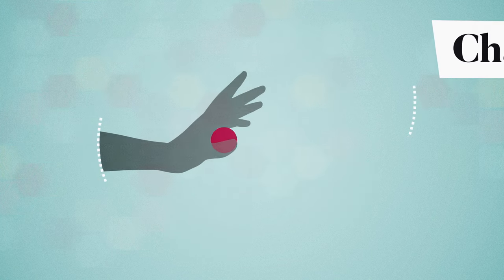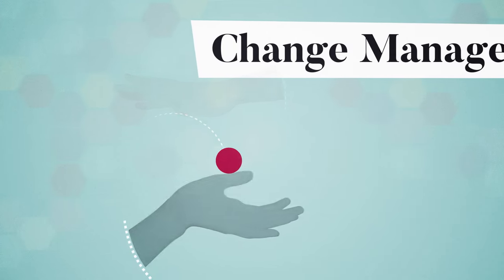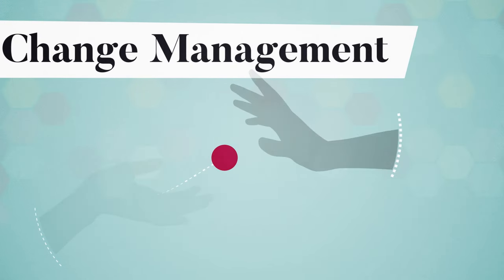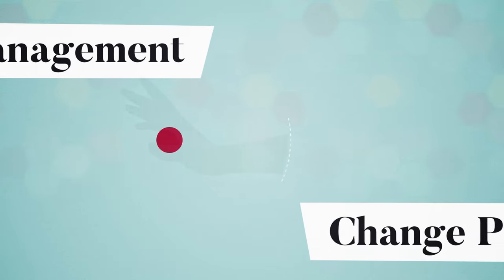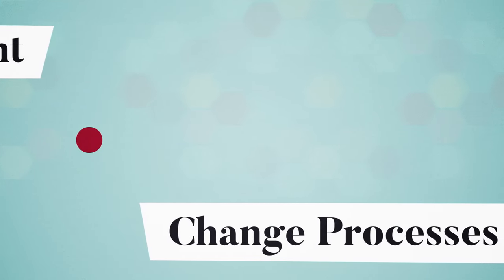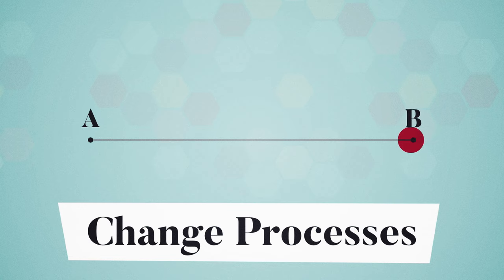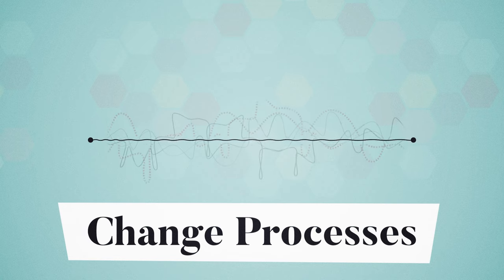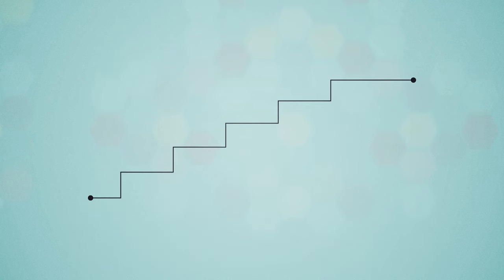Change management is the process of guiding change to fruition, from conception to resolution. Change processes have a set of starting conditions, point A, and a functional endpoint, point B. What happens between is dynamic and unfolds in a series of five steps.